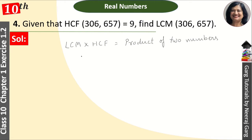This relation applies only when two numbers are given, and either their HCF or LCM is given, and we need to find the other. If there are 3 or 4 numbers, we cannot use this formula.